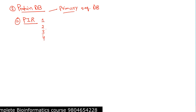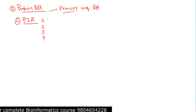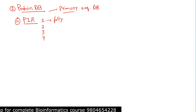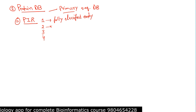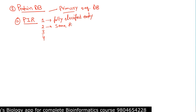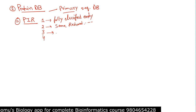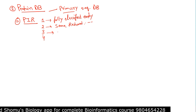PIR-1 has fully classified and annotated entries. PIR-2 includes only preliminary entries and has some redundancy. PIR-3 type entries are unverified entries.